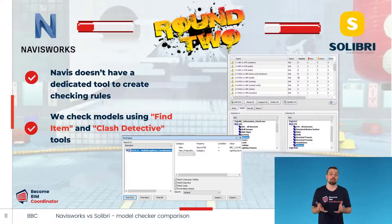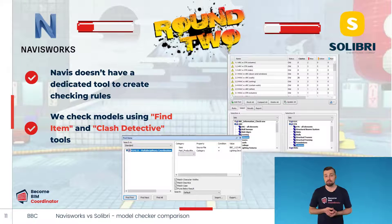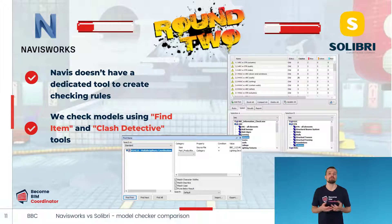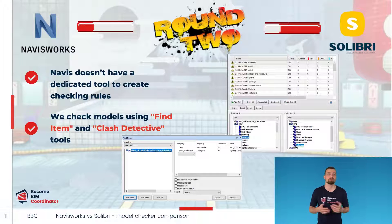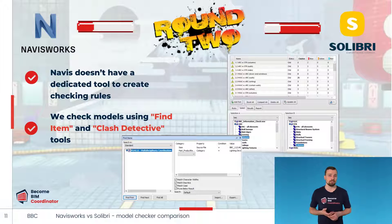Navisworks doesn't have a dedicated tool to create checking rules as we have in Solibri. There are no pre-built templates or libraries that we can use to make them. We create rules using the Find Item tool and the Clash Detective tool, or a combination of both depending on what we are trying to achieve. Unfortunately, the checking capabilities of these tools are quite limited in comparison to the Ruleset Manager from Solibri.